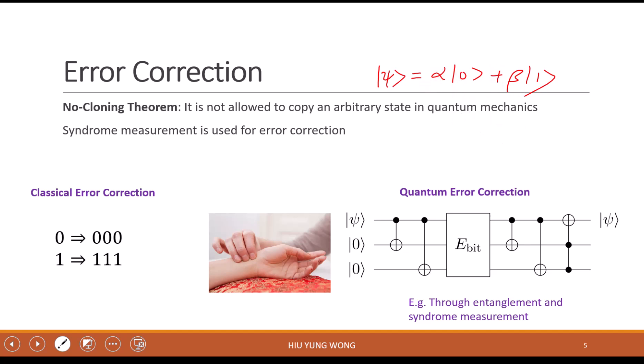So it can be alpha |0⟩ plus beta |1⟩. I give you one qubit and ask you to copy, you won't be able to copy. If you try to do something to copy, you would destroy the original state.